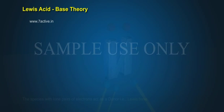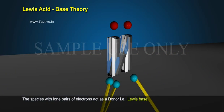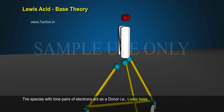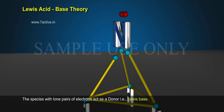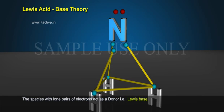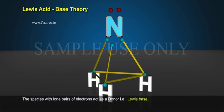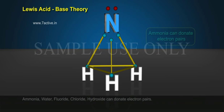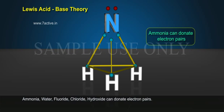The species with lone pairs of electrons act as a donor, that is, a Lewis base. Ammonia, water, fluoride, chloride, and hydroxide can donate electron pairs.